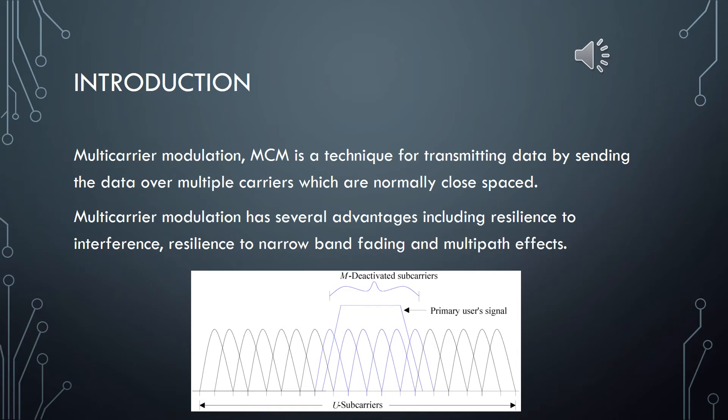So what's MCM? Multi-carrier modulation is a technique for transmitting data by sending the data over multiple carriers, which are normally closely spaced. Multi-carrier modulation has several advantages including resilience to interference, resilience to narrowband fading, and multipath effects. As a result, multi-carrier modulation techniques are widely used for data transmission as it's able to provide an effective signal waveform which is spectrally efficient and resilient to the real-world environment.